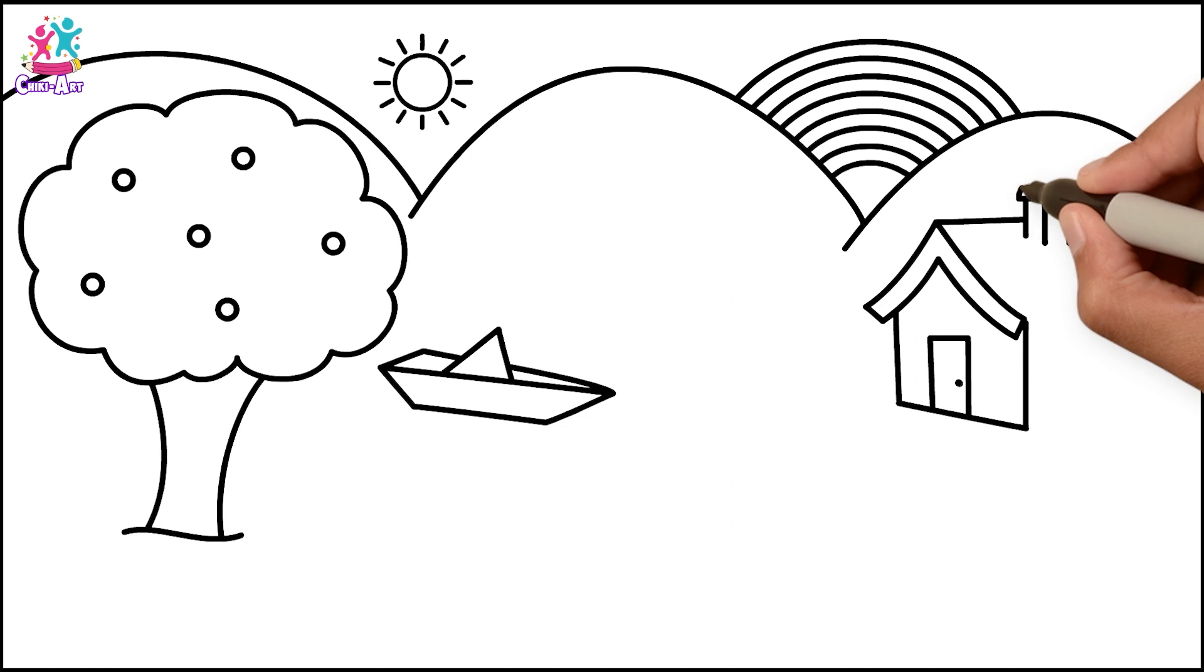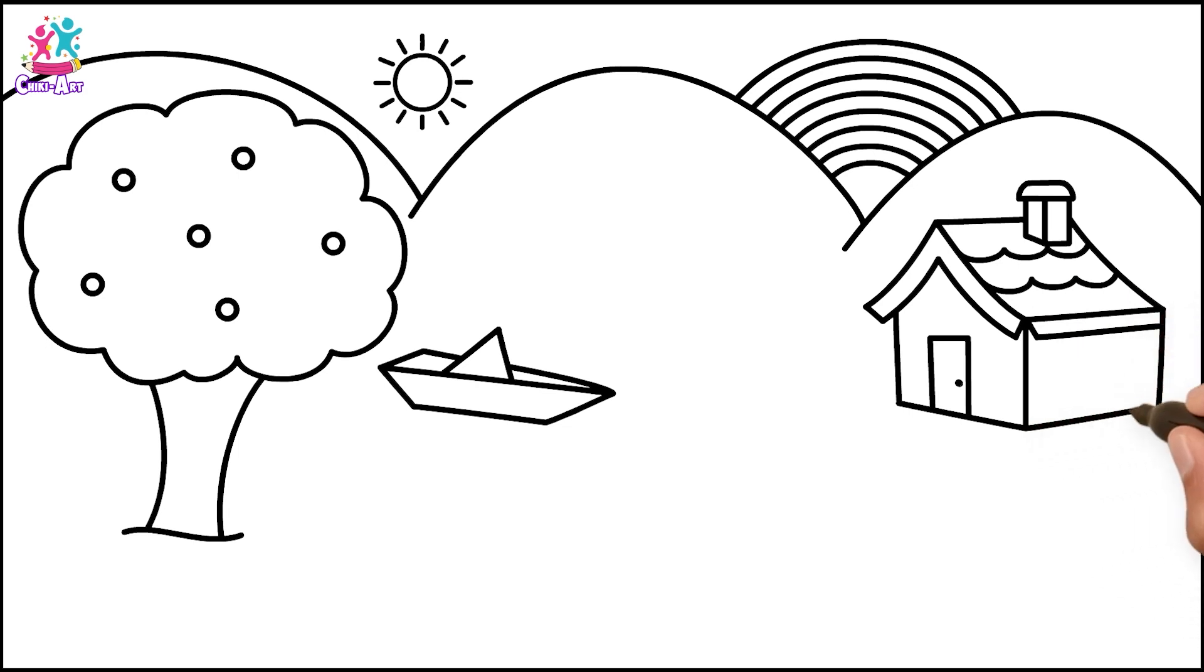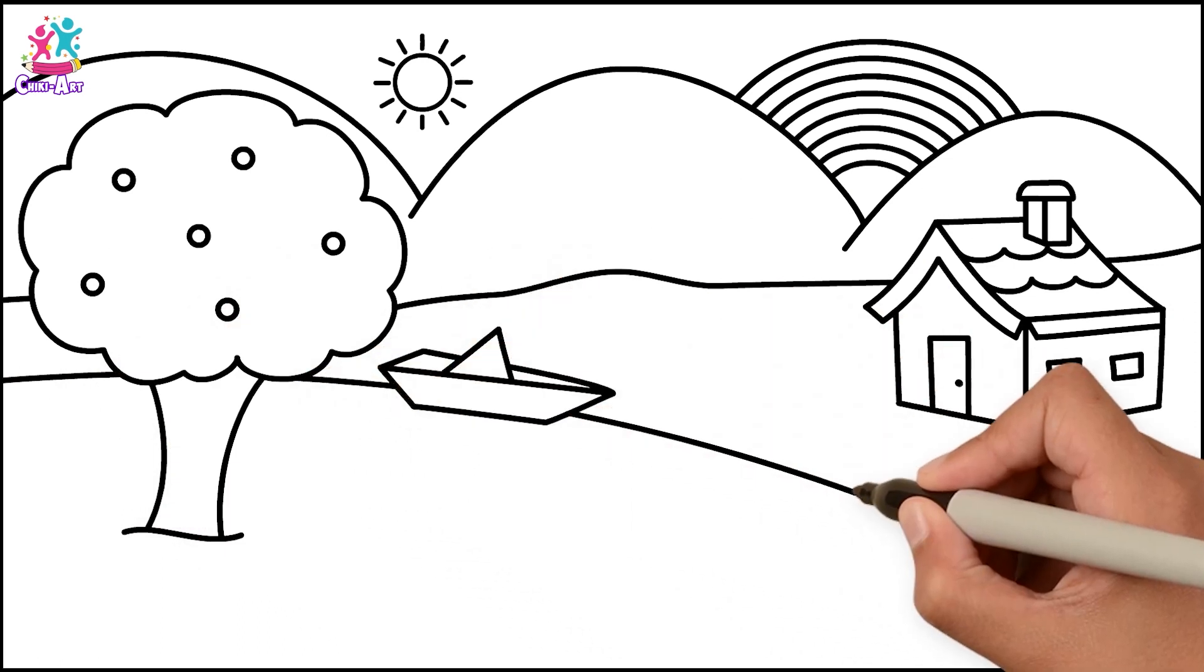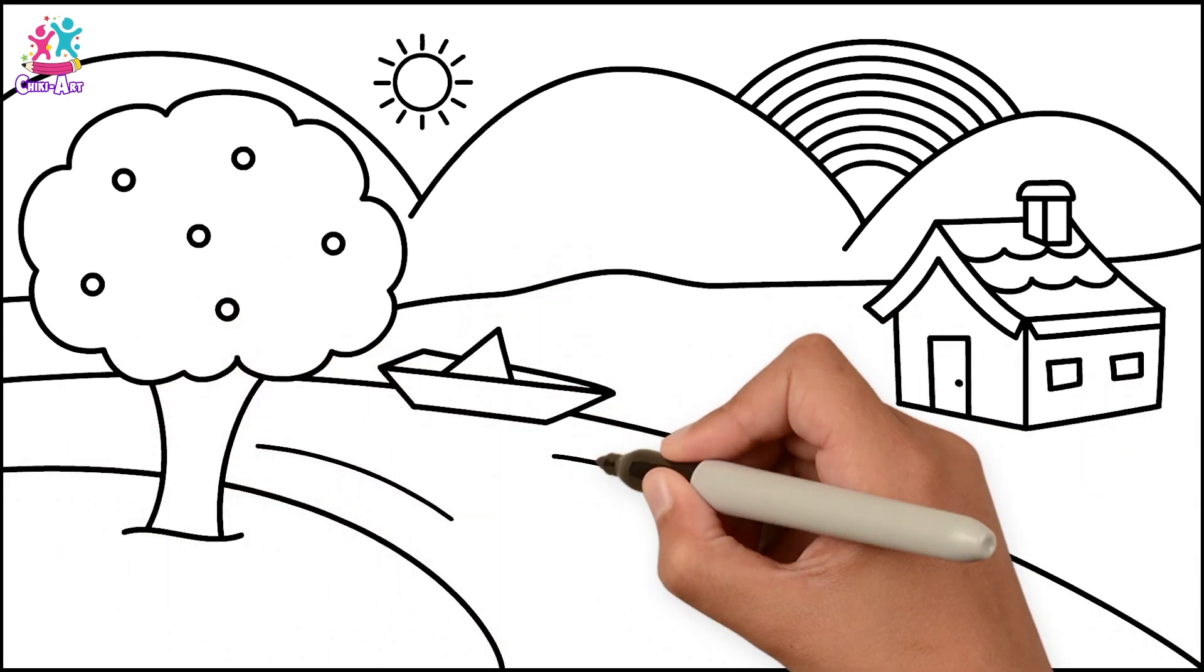A chimney and some tiles, some windows. Let's add in a river, some grass.